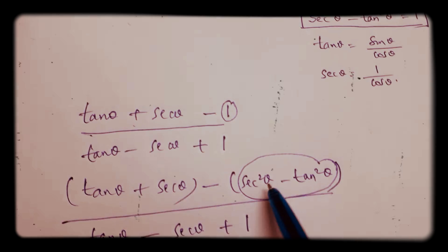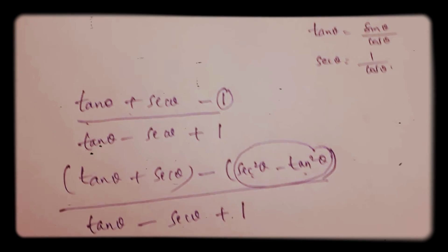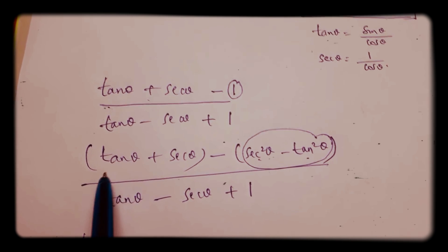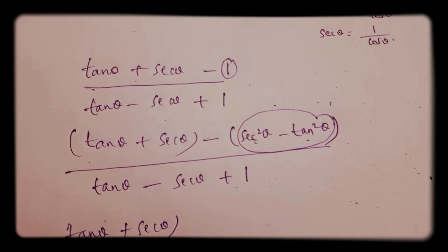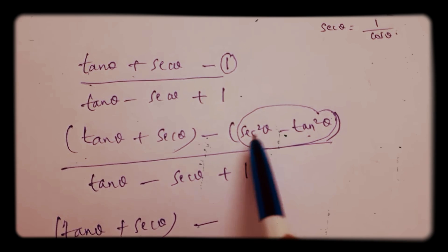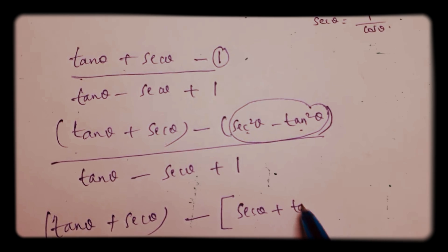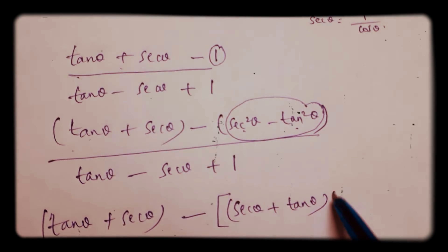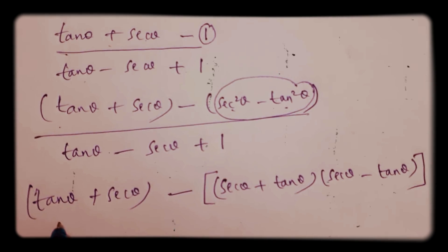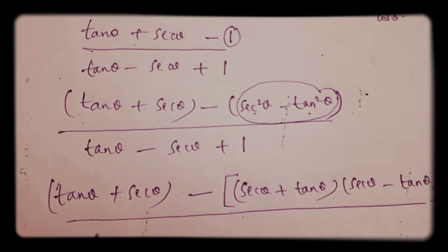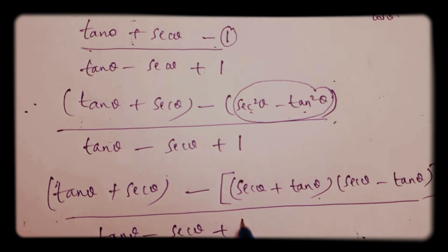Here, sec²θ - tan²θ is in the form of a² - b², so I can write it as (a + b)(a - b). Therefore it becomes (sec θ + tan θ)(sec θ - tan θ), which is (a + b)(a - b). So the numerator is tan θ + sec θ - (sec θ + tan θ)(sec θ - tan θ), with the denominator as it is: tan θ - sec θ + 1.